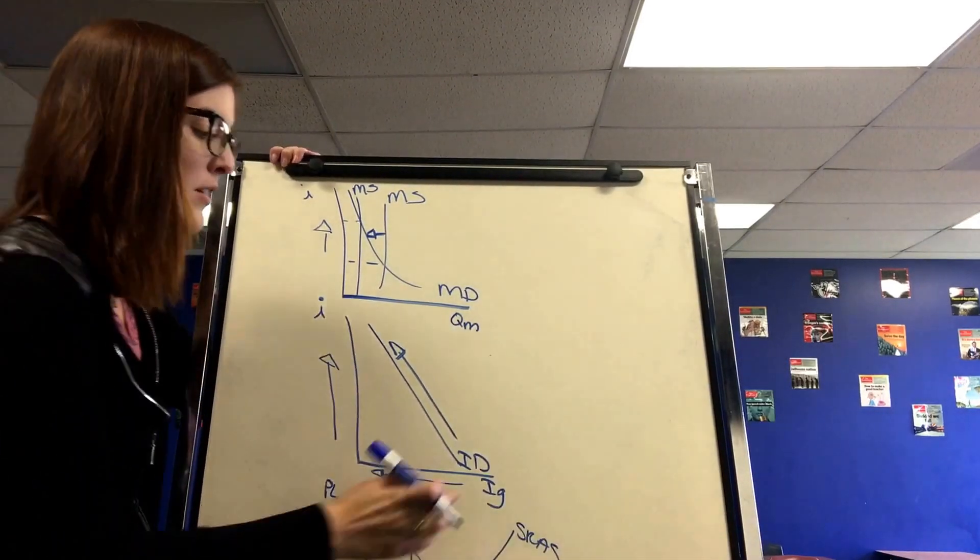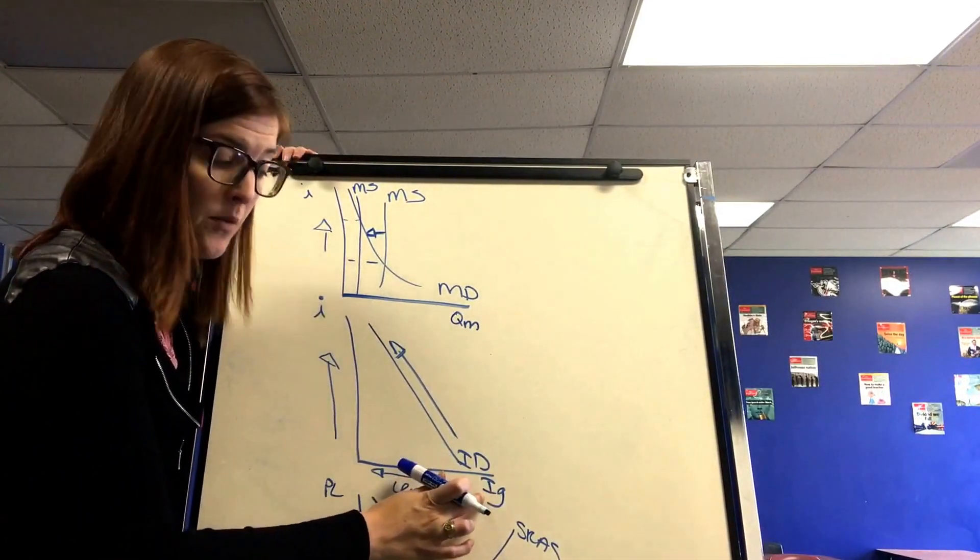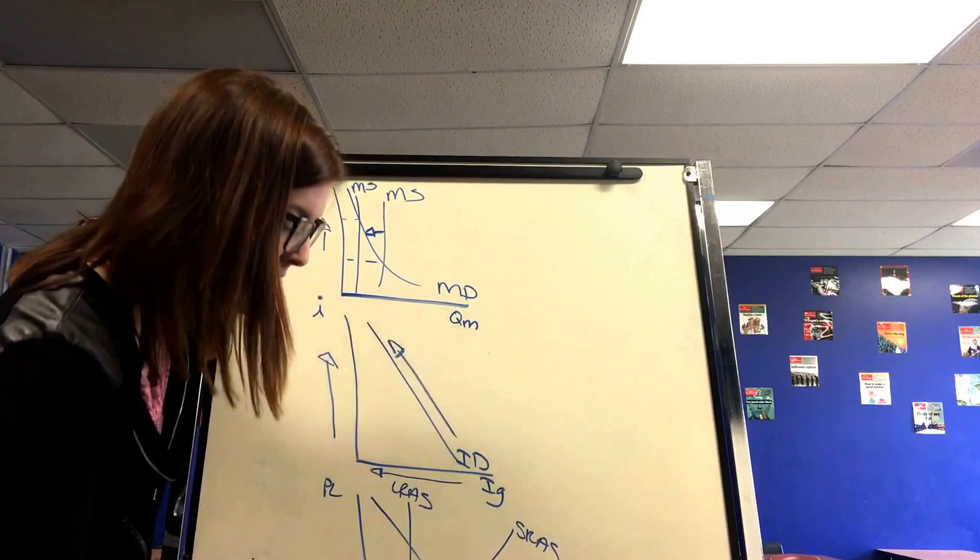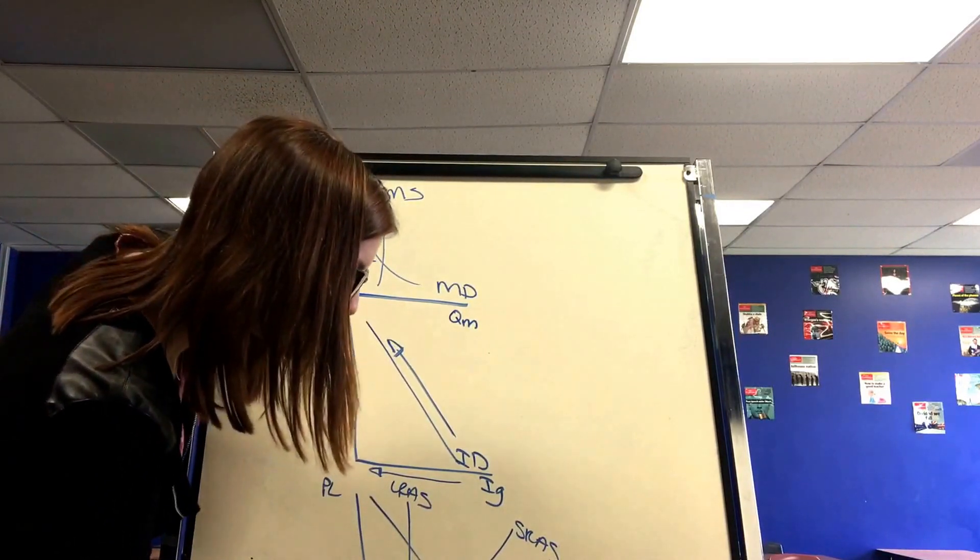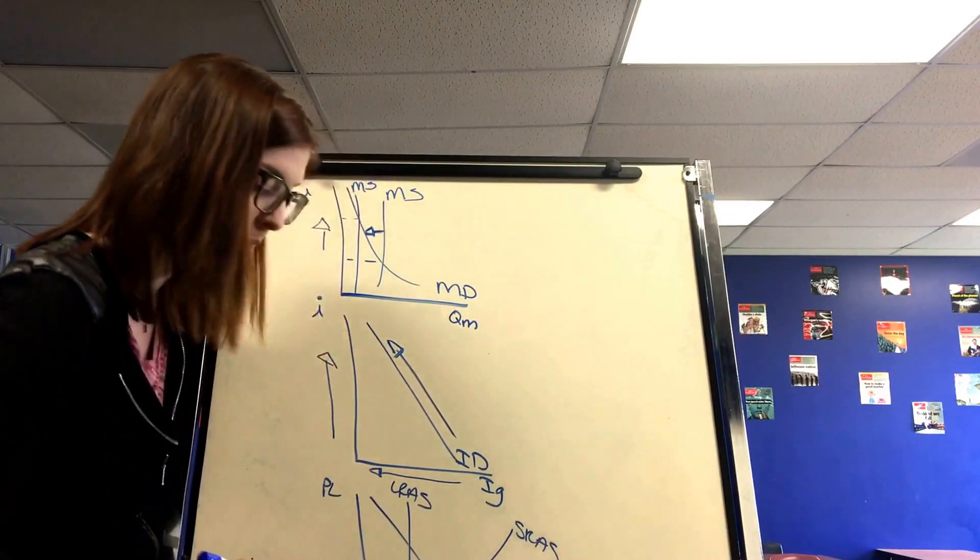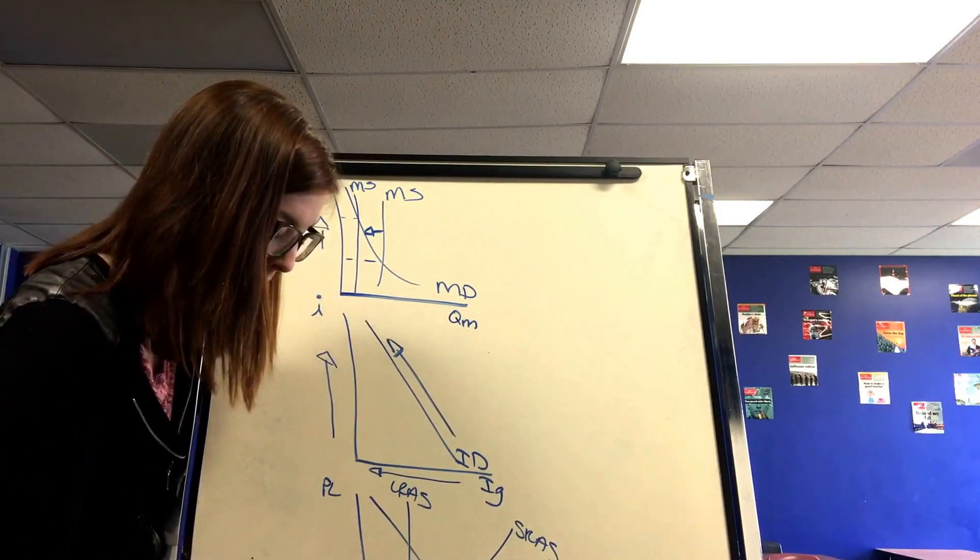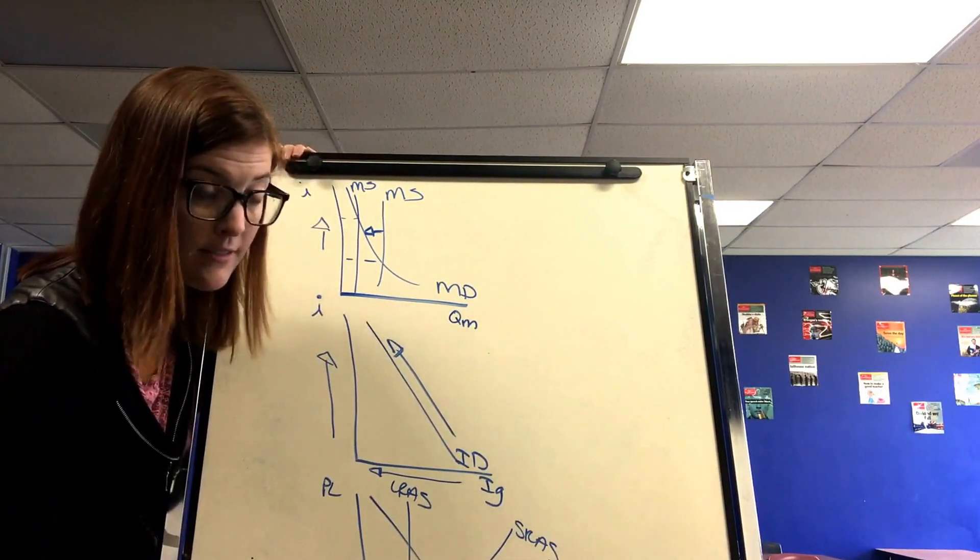And then on the aggregate model, if IG is going down, GDP is going down, so the aggregate demand line would shift to the left, hopefully bringing us back to long run equilibrium, which will decrease price levels. This is how they're fighting inflation.